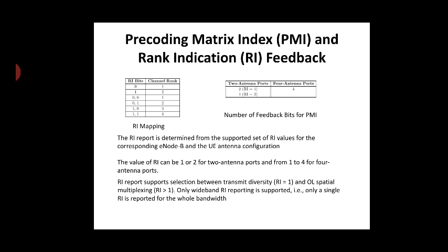The RI is determined from the supported set of RI values for the corresponding eNodeB, based on the user equipment antenna configuration. The value of RI can be 1 or 2 for 2 antenna ports, and from 1 to 4 for 4 antenna ports.